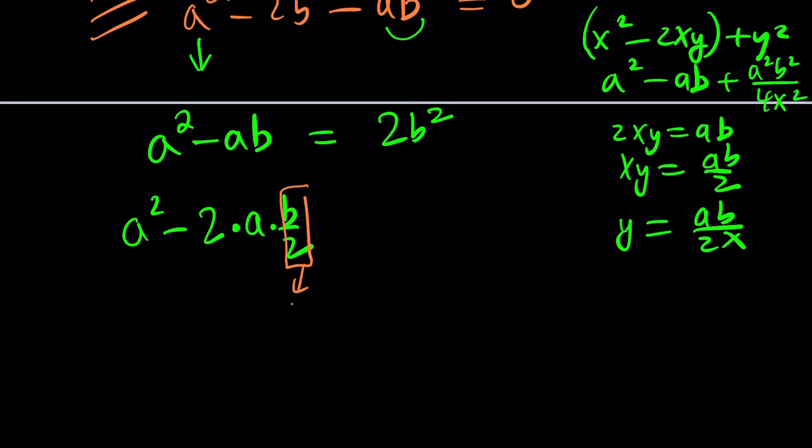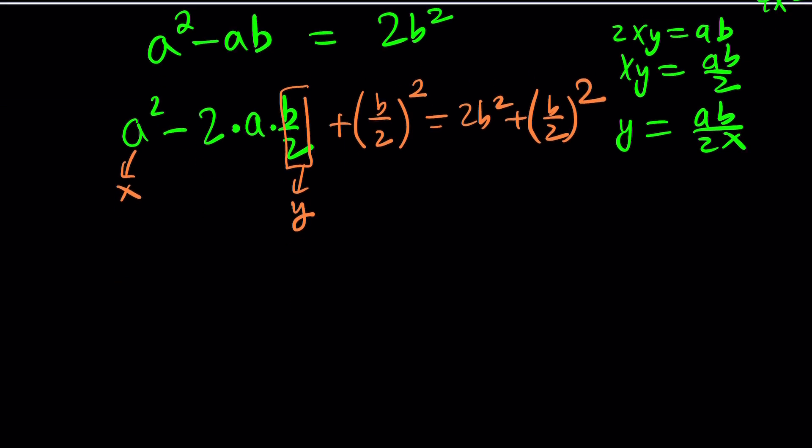So I need to add y², which is half of b squared. I need to add the same thing on both sides. So now this becomes (x-y)². We added y² to both sides. You can write it as (x-y)². At the same time, it is the same thing as (a - b/2)². This is equal to 2b² + b²/4, which is going to make 9b²/4.